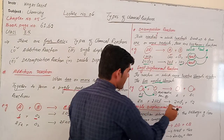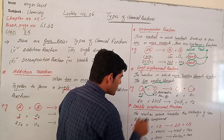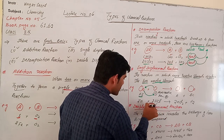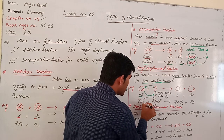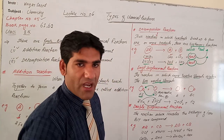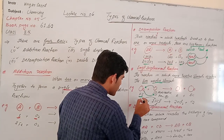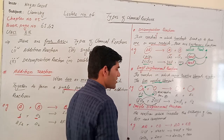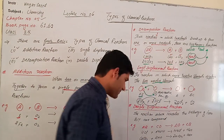Let us take an example: zinc plus 2HCl gives rise to zinc chloride plus hydrogen gas. Zinc displaces hydrogen because zinc is more reactive than hydrogen, giving rise to zinc chloride and hydrogen gas.